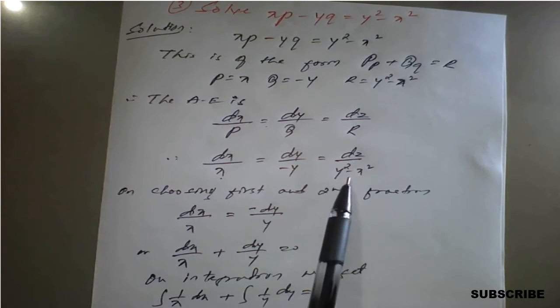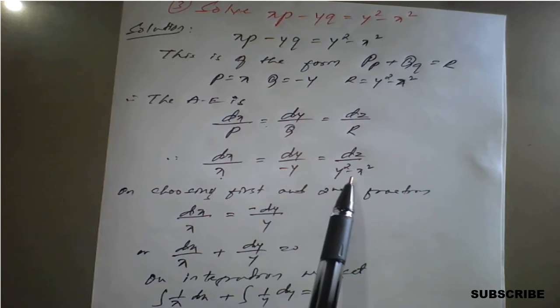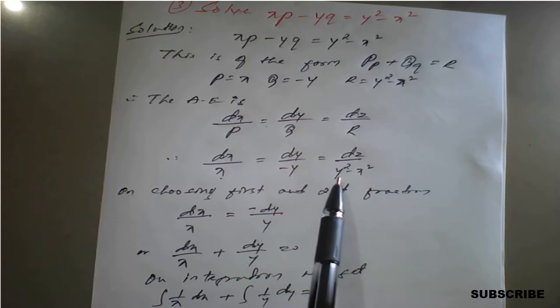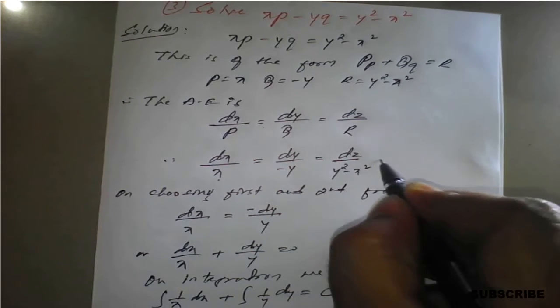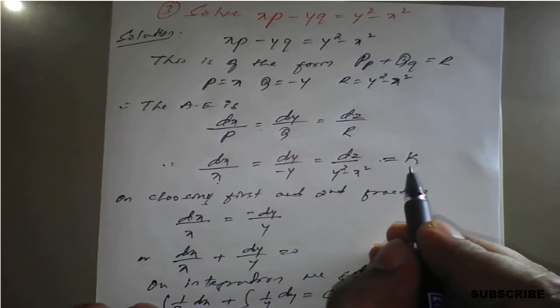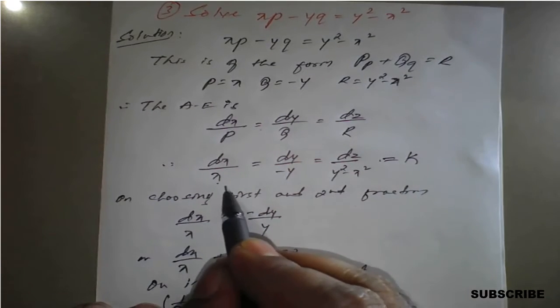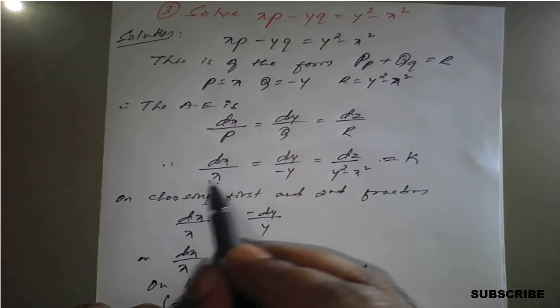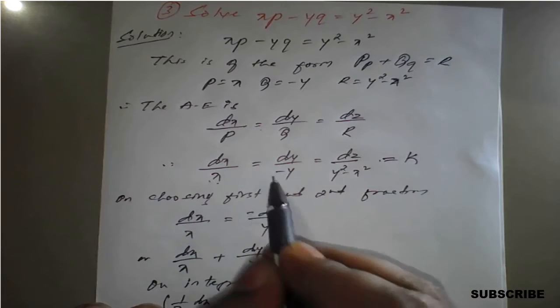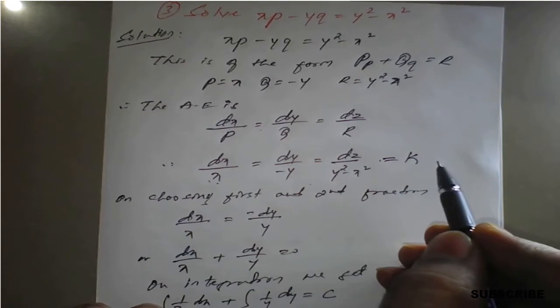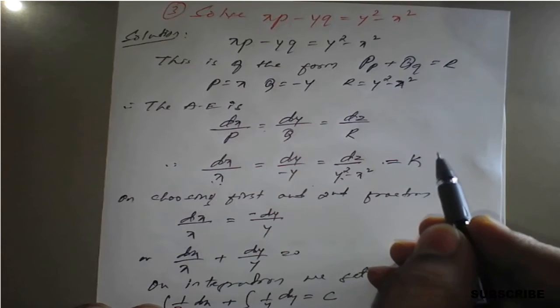If we take the first and last pair, or the second and third pair, it is not possible to simplify by direct integration. In such a case, we consider those fractions equal to some result k, and we need to choose multipliers in such a way that when multiplied with the respective denominators on the right-hand side, the result becomes 0.